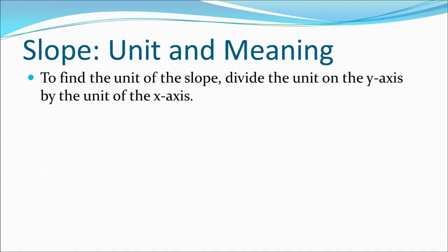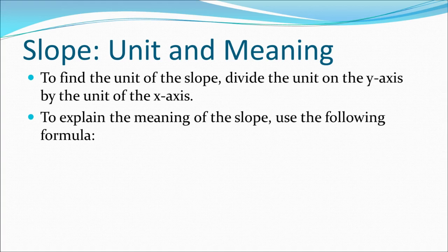Although we'll be using software to calculate the slope, the unit that we derive from our two variables and the meaning of that unit is the springboard into each new unit. To find the unit of the slope, divide the unit on the y-axis by the unit of the x-axis. If your x-axis was time in seconds and your y-axis was distance in meters, you would divide meters by seconds. When we talk about the meaning of the slope, we're really describing both what we observed in our lab and what we observed on the graph.